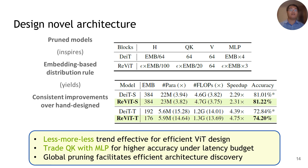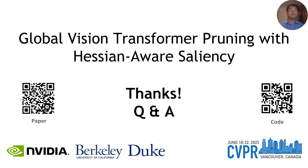With these results, we want to convey the message that observing the pruned dimensions and parameter distributions from global structural pruning can lead to the discovery of new families of efficient architectures. That's all of my presentation. You may learn more details of this work from our paper and code. Thanks for listening.